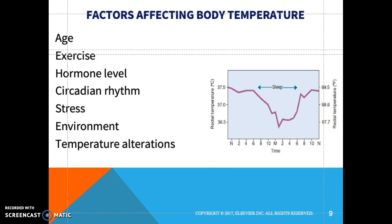Hormonal changes also affect temperature — during the menstrual cycle, temperature tends to rise by about one degree, which can be a useful predictor for pregnancy or for monitoring peak fertility. Stress also affects body heat production.